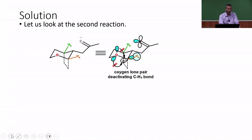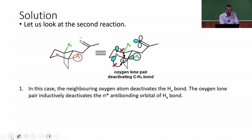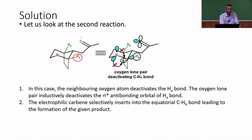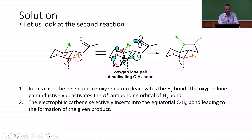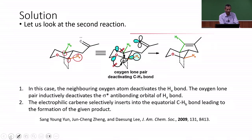In the second reaction, the carbene position is different and a cyclic system is already present. The hydrogen bond adjacent to oxygen (HA) is actually deactivated rather than activated. Therefore the carbene cannot insert on that carbon. However, no such destabilization exists on the carbon bearing HB, so the carbene undergoes cyclization there, giving the cyclic product shown.